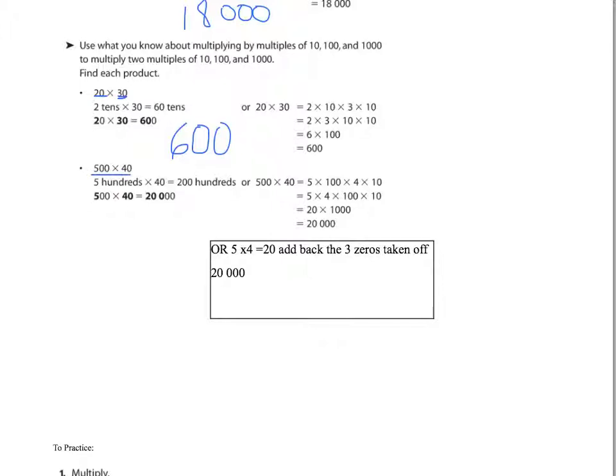500 times 40. 5 hundreds times 40. Or you can just think of it as 5 times 4 which is 20. How many zeros did I take off? I took off 3, so I need to add 3 back on. Don't let this zero fool you. It was there before. Three zeros back on, so 20,000.